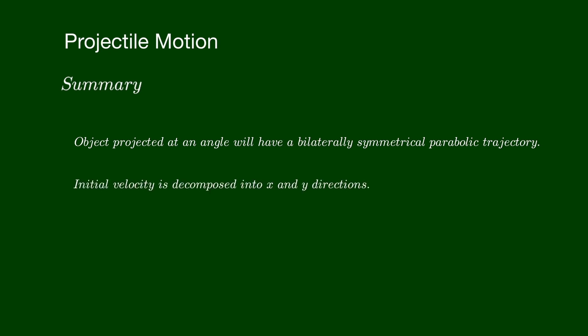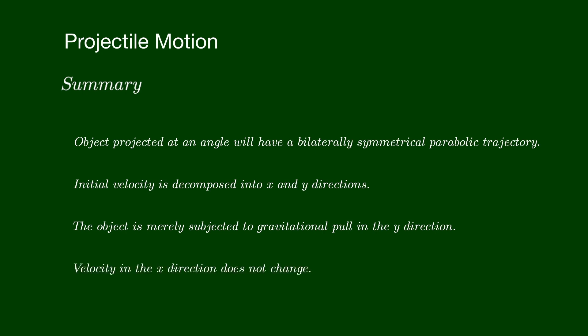To summarize: an object's motion follows a bilaterally symmetrical parabolic trajectory when projected at an angle. The object's initial velocity is decomposed into two components in the x and y directions to simplify the motion computation. The only force acting on the object is gravity, directed along the y axis, so no force acts in the x direction. As a result, the initial velocity component on the x axis remains constant throughout the motion, and the object reaches its maximum height when its vertical velocity is zero.